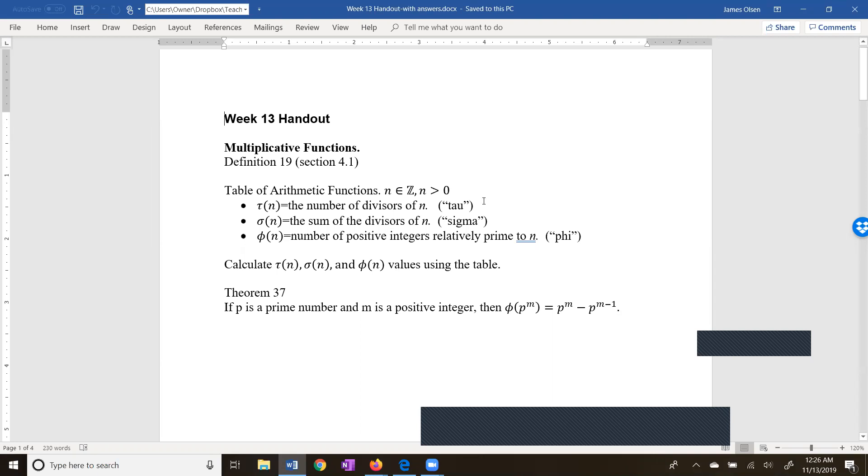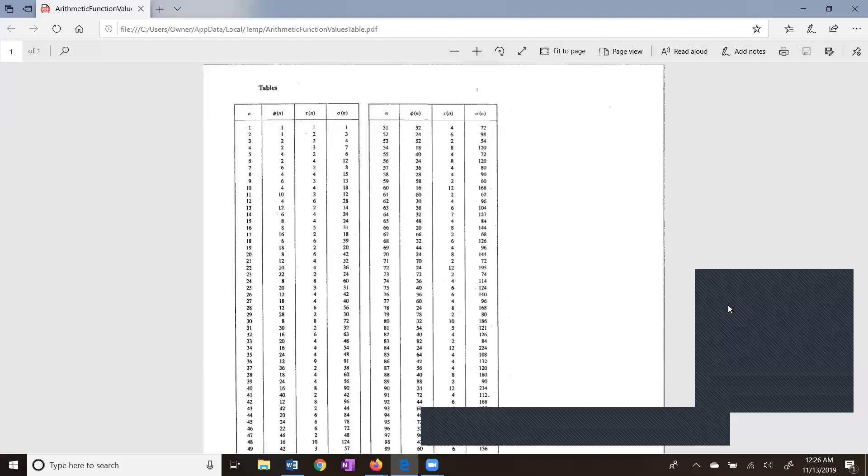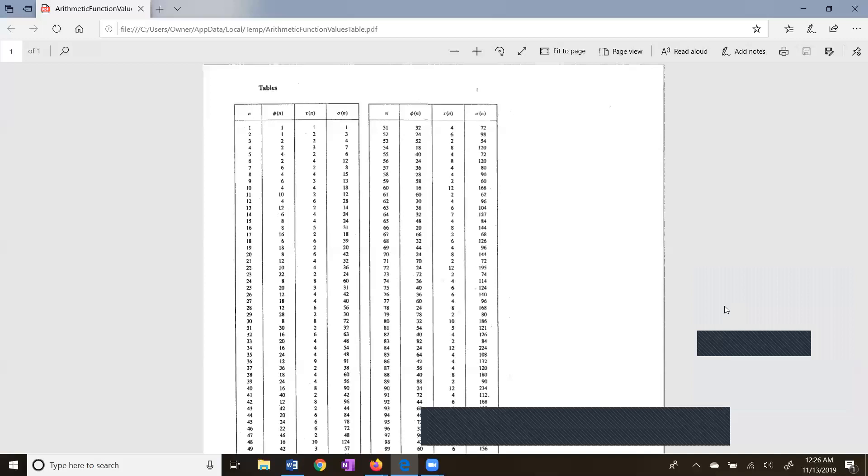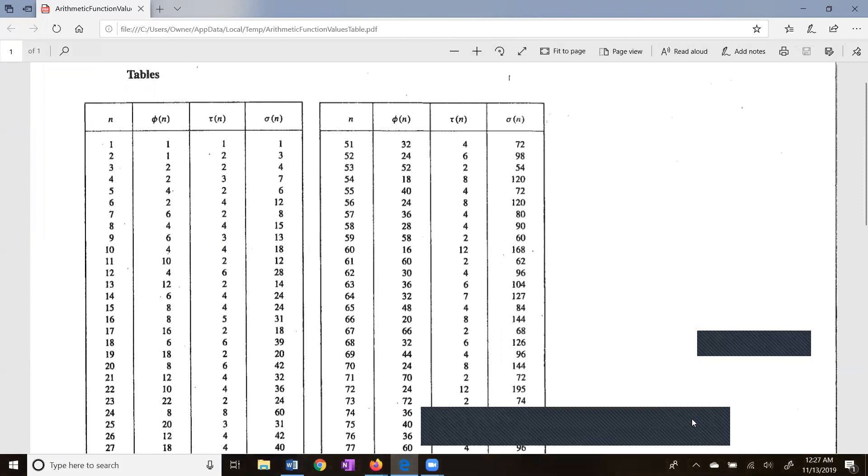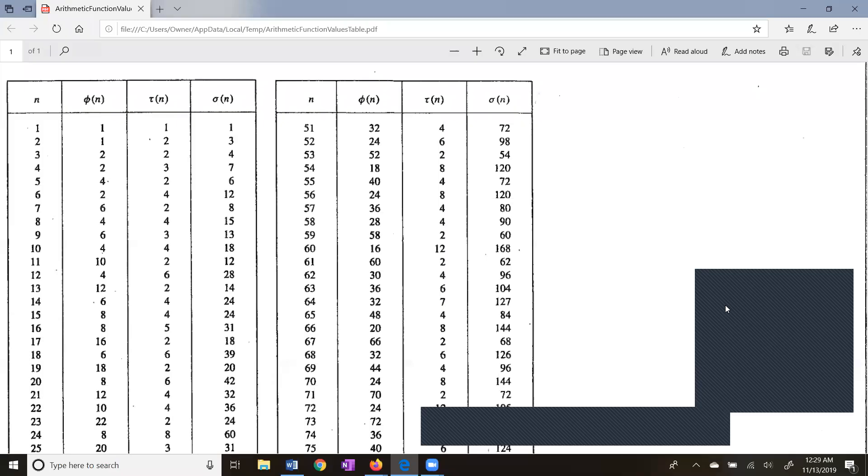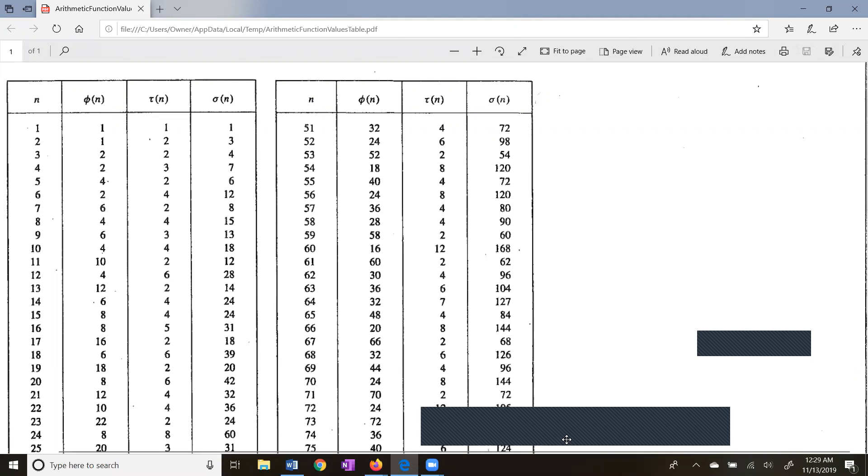Now we have a handout that shows values of these functions. Let's take a look at some examples. So here is our table. Let me make this a little bigger. Okay, you want to have these definitions in front of you. Let's take a look, for example, at 10 and the values of phi, tau, and sigma of 10.